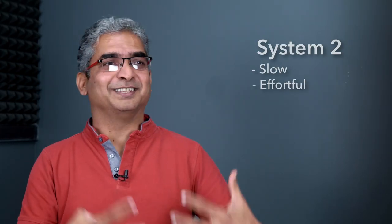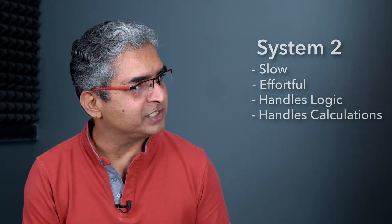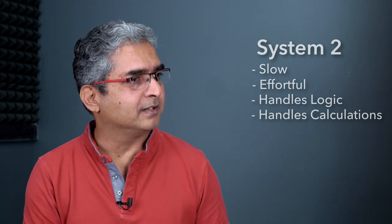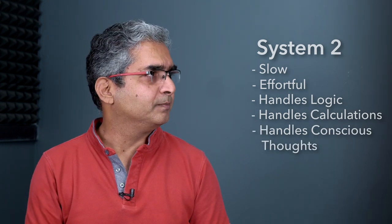Whereas system two is very slow. You have to take extra effort to actually start using system two, right? Multiplication doesn't happen automatically. Especially 17 by 24. I remember the numbers. I don't remember the result. Also, most of the time you don't use your system two. You think you are like a thinking person, but you are not really, right? All the logic, the calculations are from your thinking brain. And all your conscious thought comes from there.